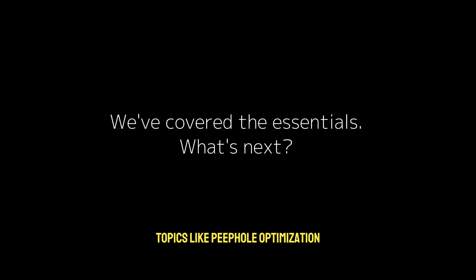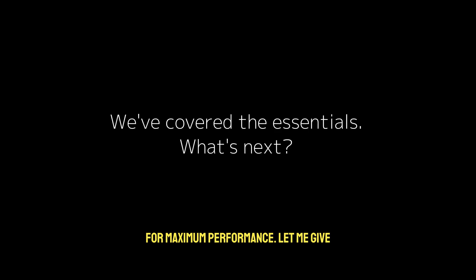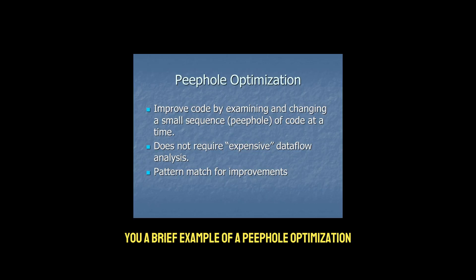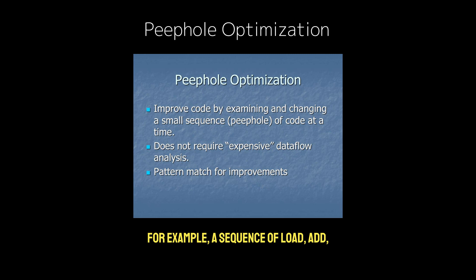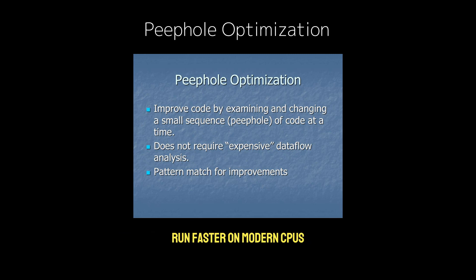There's more to explore beyond these essentials. Topics like peephole optimization, loop unrolling, and vectorization all happen at the backend stage. LLVM also supports just-in-time compilation, where machine code is generated on the fly for maximum performance. For example, a sequence of load, add, and store operations might be combined into a single add-memory instruction — these optimizations can make your code run faster on modern CPUs.